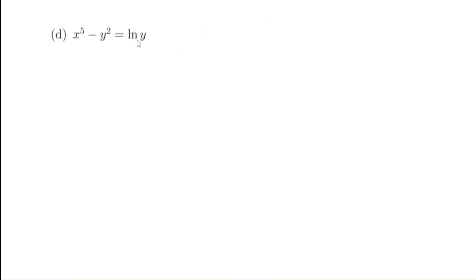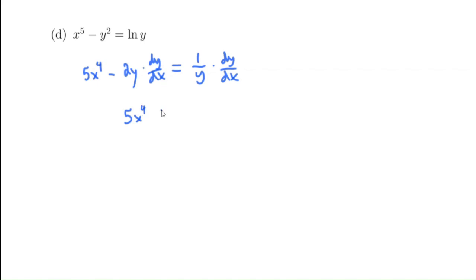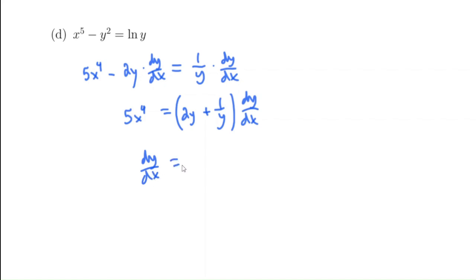For part D: x⁵ - y² = ln(y). The derivative of x⁵ is 5x⁴. The derivative of y² is 2y(dy/dx). The derivative of ln(y) is (1/y)(dy/dx). Moving the dy/dx terms to the right: 5x⁴ = dy/dx(2y + 1/y). So dy/dx = 5x⁴ / (2y + 1/y).